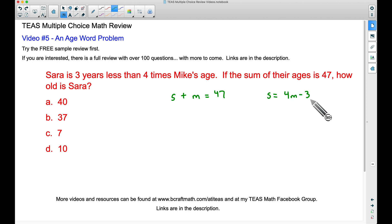Now, how is this helpful? Since Sarah's age equals this, we can replace Sarah's age in our first equation. This S is equal to 4M minus 3. So I'm going to replace Sarah's age with 4M minus 3. Now let's bring down the rest of this equation: plus M, and this equals 47.